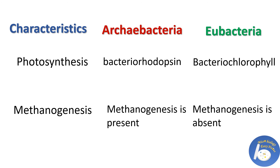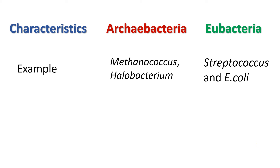Next feature is methanogenesis. Some Archaebacteria produce methane as a byproduct of their metabolic processes, but in Eubacteria, methane production is absent. Examples of Archaebacteria include Methanococcus and Halobacteria. Examples of Eubacteria include Streptococcus and E. coli.